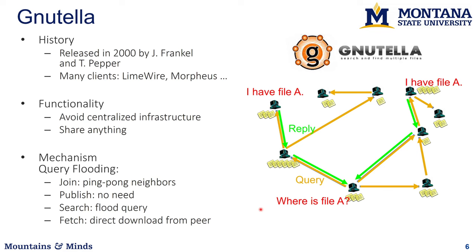To join the Gnutella network, you would find some neighbors — maybe from a list of nodes — pinging them and getting their list of neighbors. To publish something, you don't need to do anything special — you just have a file stored locally. When someone wants to find a file, they send the query among peers until something is found. If a query reaches you asking 'do you have this file?', you look in your own cache and say yes, or forward the query to your neighbors. Once you traverse the network and find who has the file, you can set up a direct link with them to download it, without forwarding traffic back through the peering structure.